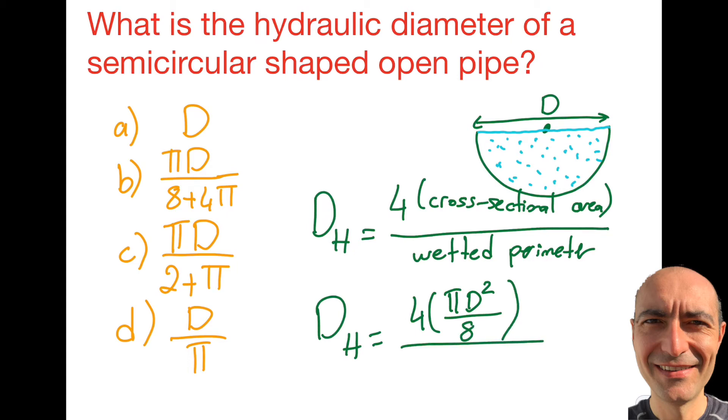About the wetted perimeter—now this part is important. This is an open channel. If this was closed, I will explain in a minute, but let's first do the open one. The whole full circle is πD, so this will be half of it—πD/2.